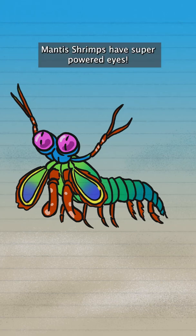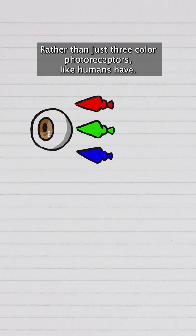Mantis shrimps have superpowered eyes. Rather than just three color photoreceptors like humans have, these shrimps have 12.